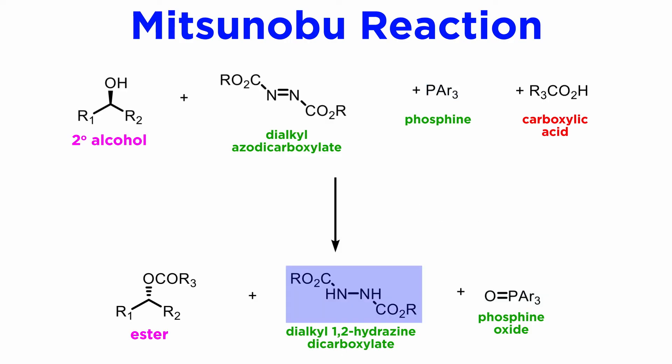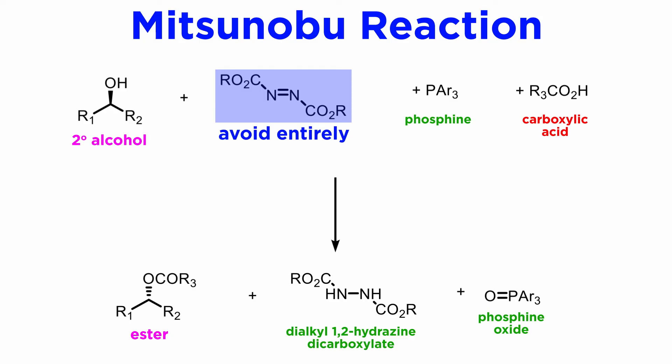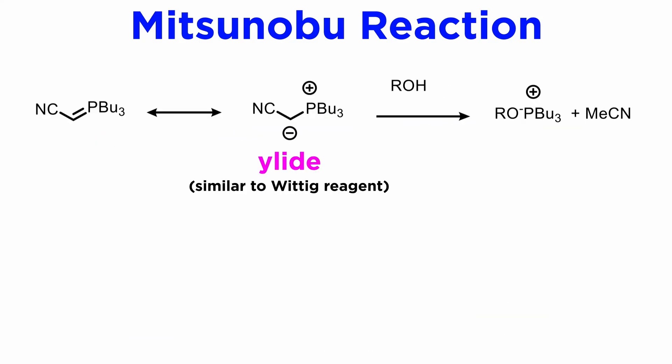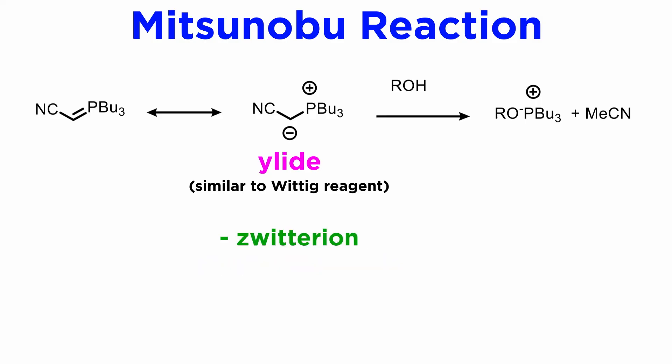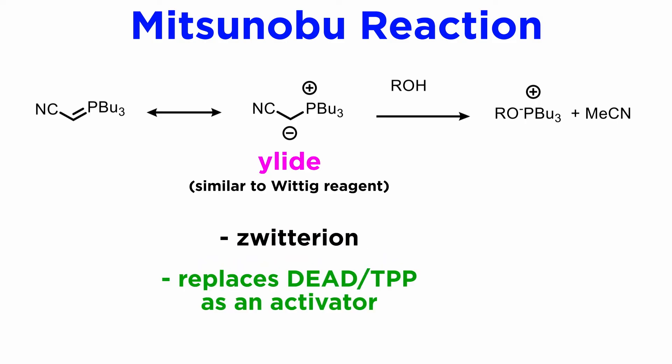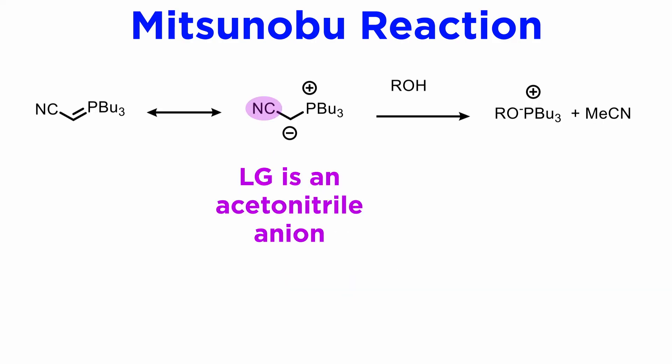Several approaches have been devised to facilitate removal of the hydrazine dicarboxylate, which is organic-soluble and remains in the product layer during workup. The most successful approaches avoid the azo compound altogether. One method gaining the approval of the synthetic community uses an ylide — basically a ylide reagent — developed by another Japanese chemist, Tetsuto Tsunoda, in 1996. This ylide replaces the adduct from DEAD and TPP as an activator. Here the leaving group is an acetonitrile anion, which gets protonated to acetonitrile, a volatile solvent which can be evaporated easily. Thus current research is making the methodology more practical and scalable.